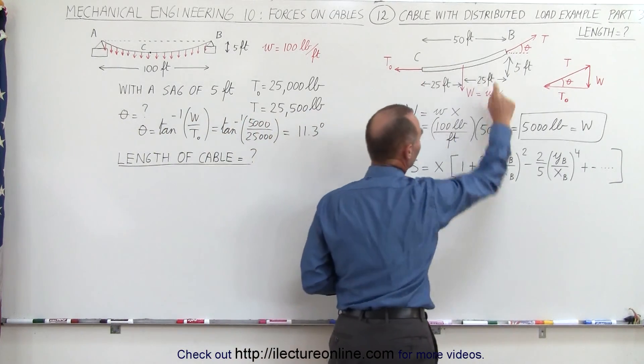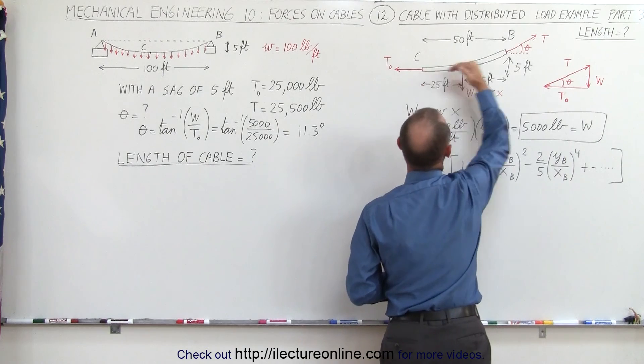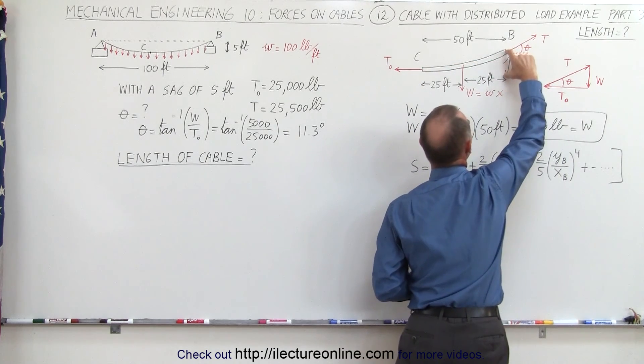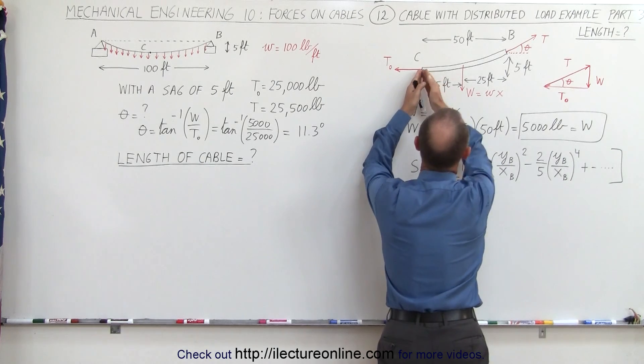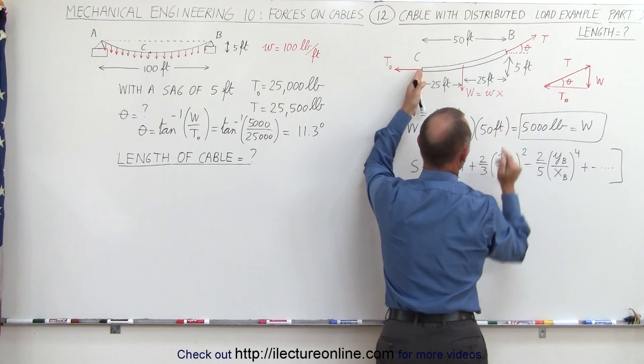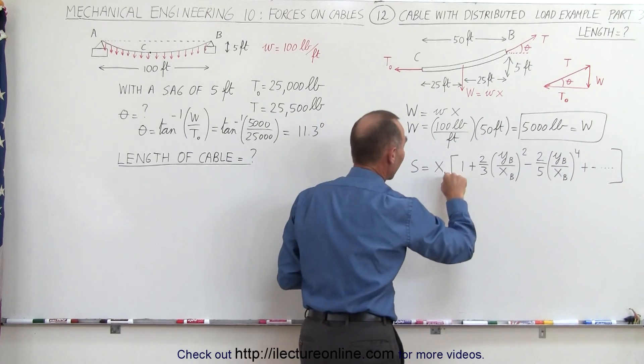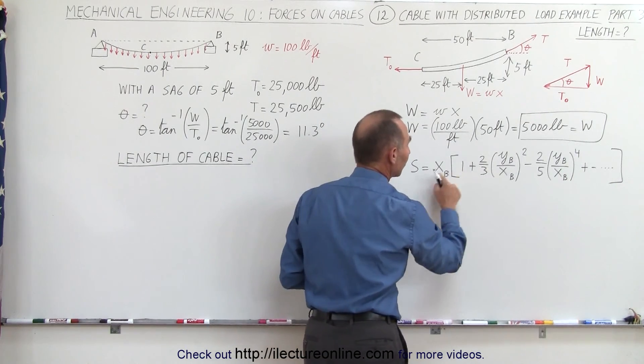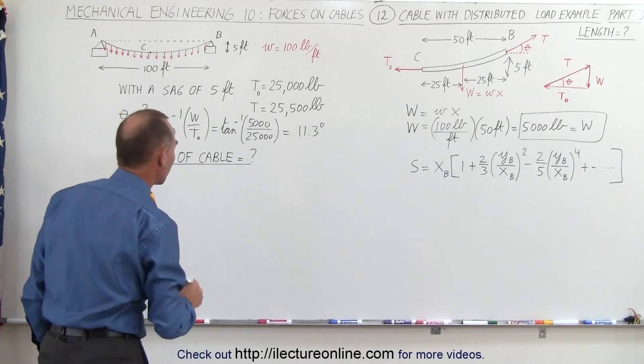X, of course, is the horizontal distance. Y sub B is the distance from the lowest point in the cable to where it's attached at B, that's the sag, and X sub B is the distance from the lowest point of the cable, the horizontal distance, to here. That's basically the same value that we have here, so maybe what we want to do is call this X sub B so that you know that this is the same value. Let's plug in the numbers and see what we get.